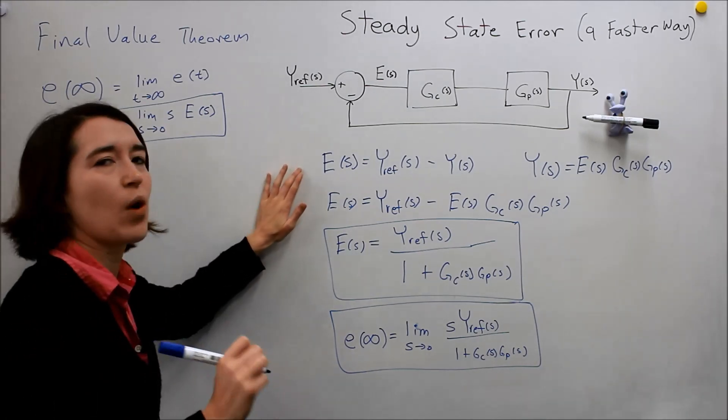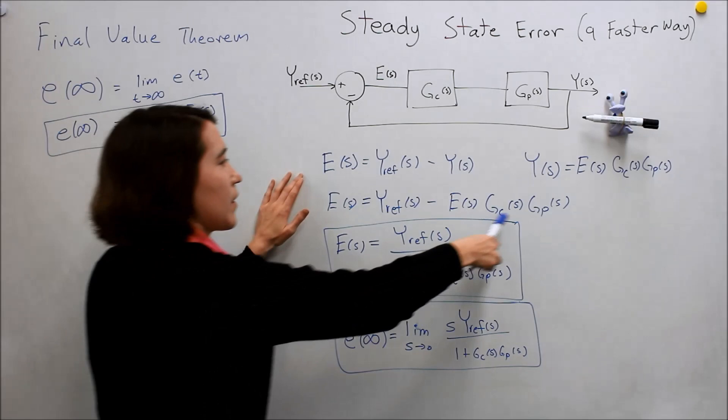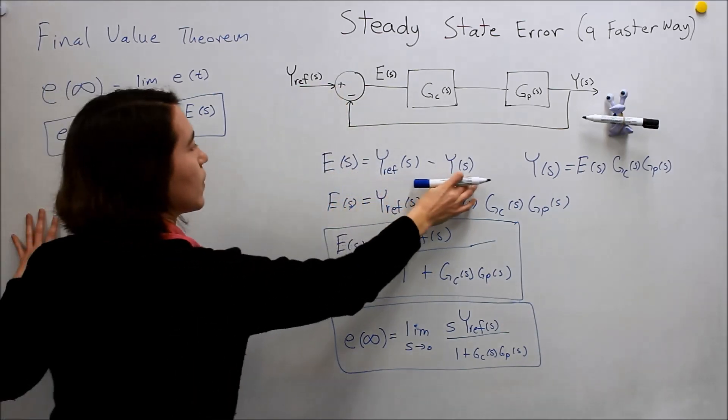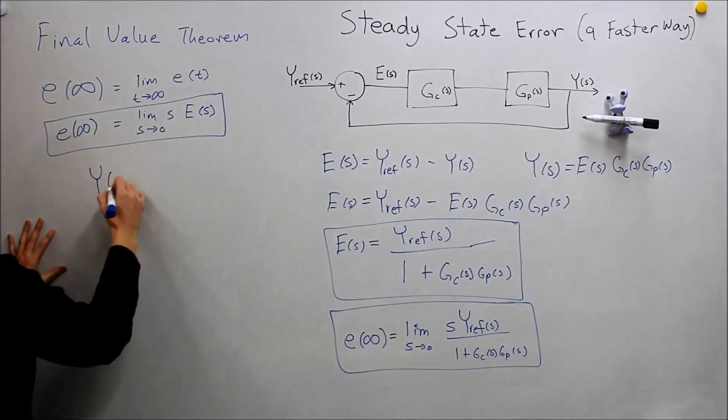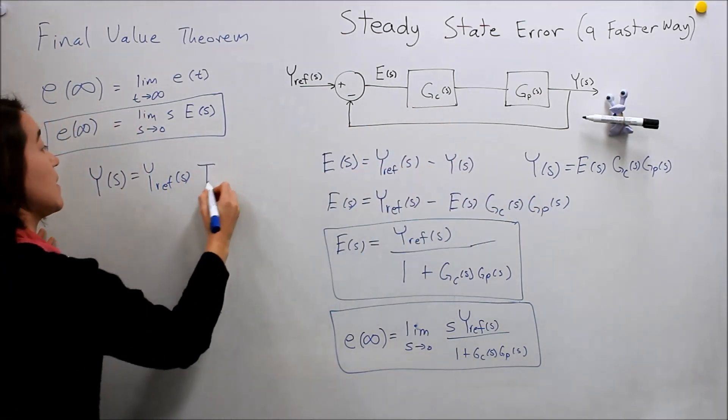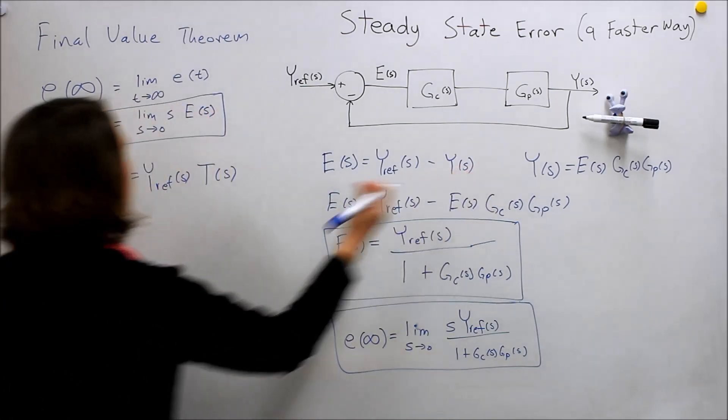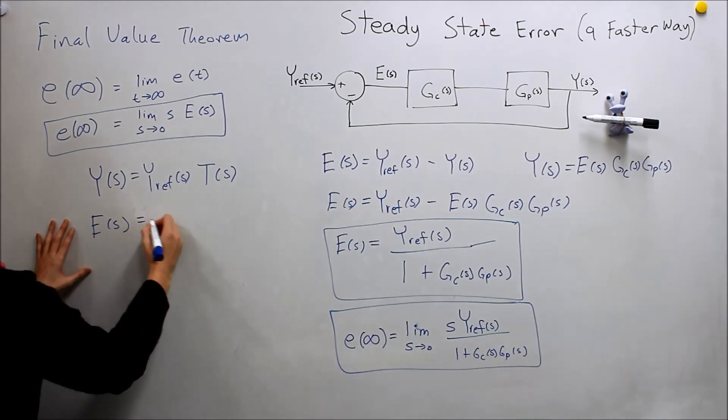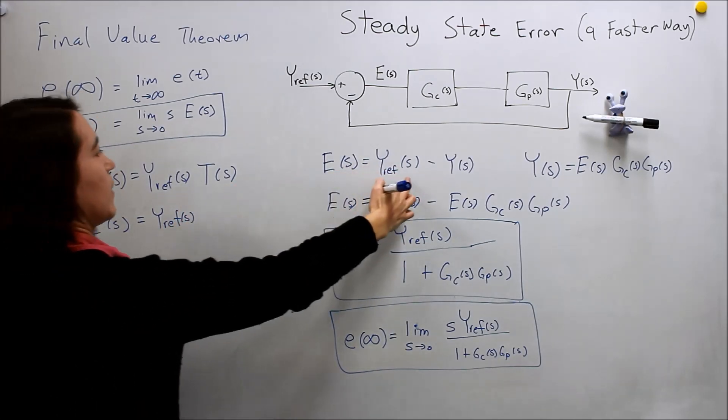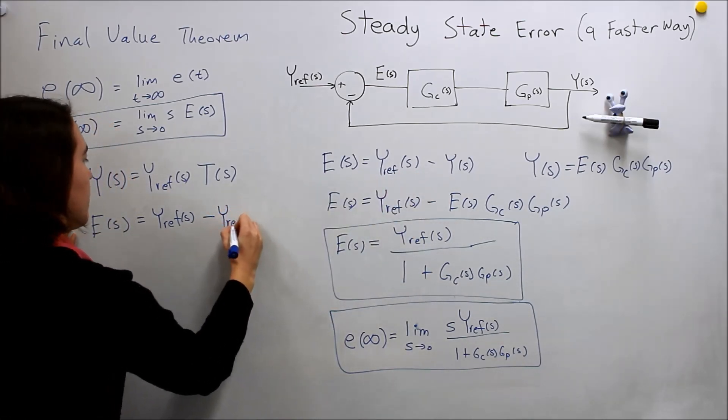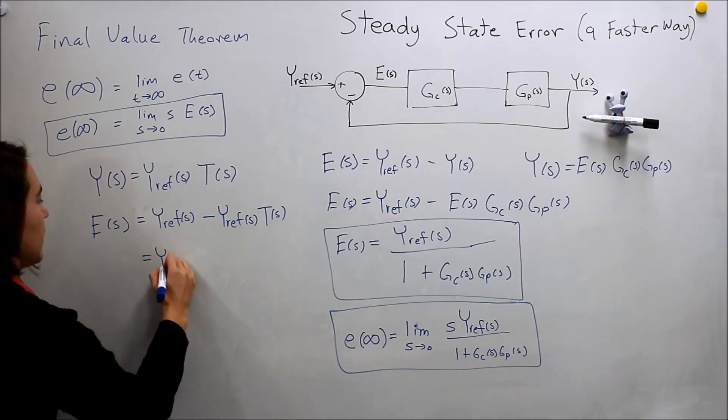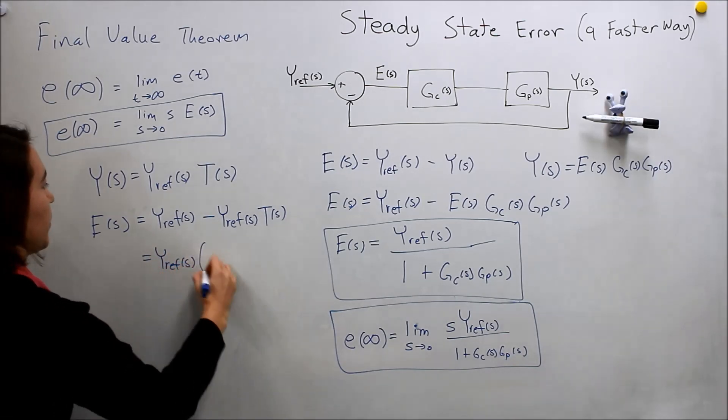You can also write e in a different way. Say you already know the closed loop transfer function, and you don't want to go through and calculate these individual ones. You can also write e as, if you find another value for y here, so y can also be expressed as this input, y ref, times the total closed loop transfer function, right? That's t. So if we then replace this y there, we would get e of s equals y ref of s. So plug that in there, we get this value minus y ref of s times t of s. And here we can see that we get y ref of s multiplied by 1 minus t of s.